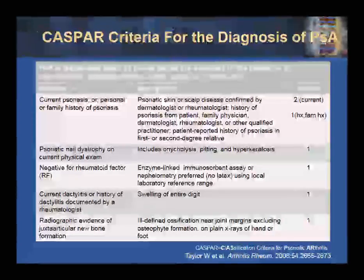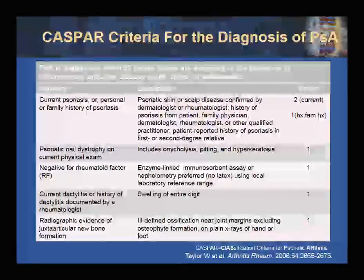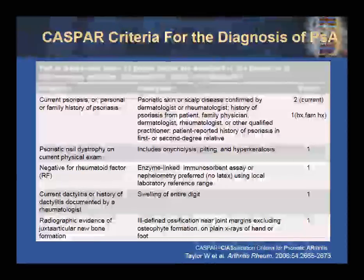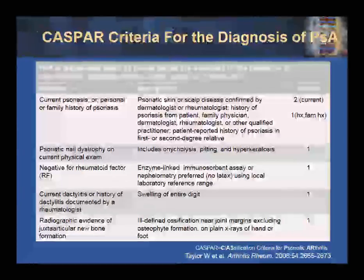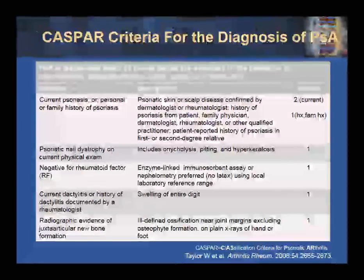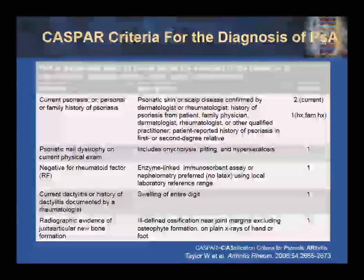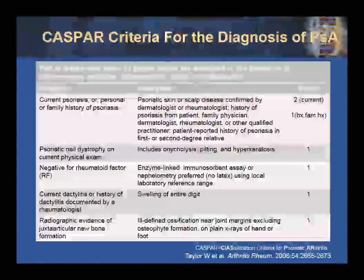The presence of psoriatic nail dystrophy — pitting, onycholysis, or hyperkeratosis — awards one point. A negative rheumatoid factor awards one point. Dactylitis or a history of dactylitis awards one point. And radiologic evidence of juxtaarticular new bone formation, otherwise known as fluffy periostitis, awards one point. If the patient has at least a total of three points, he or she meets criteria for psoriatic arthritis. Our patient had a history of psoriasis, presence of psoriatic nail pitting, and a negative rheumatoid factor — a total of three points, qualifying for a diagnosis of psoriatic arthritis.